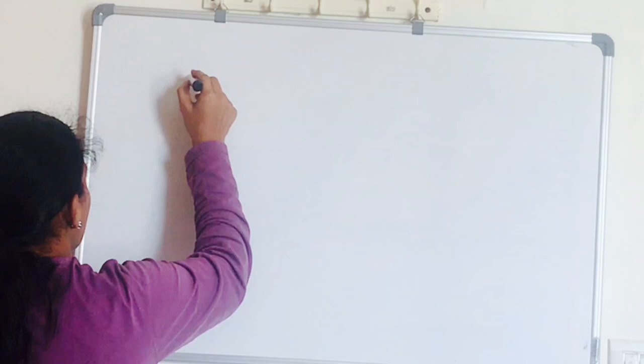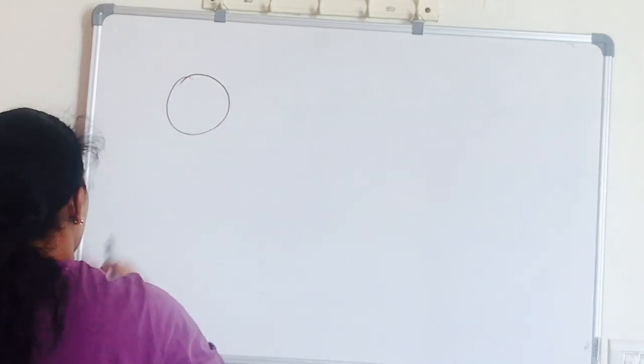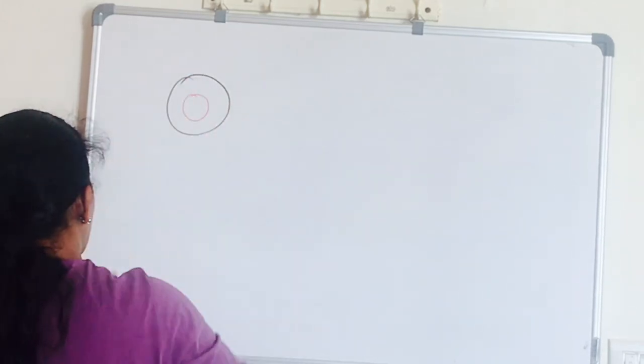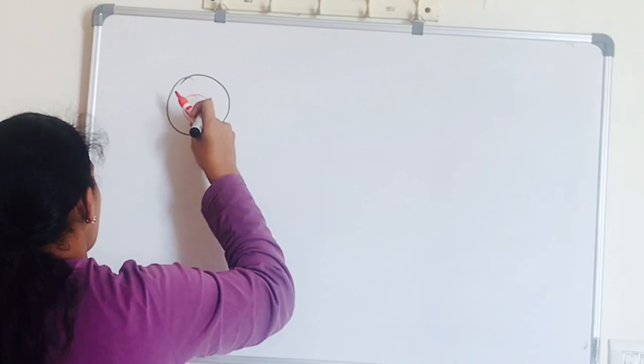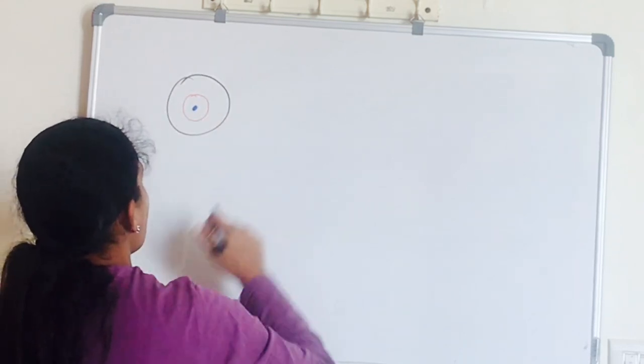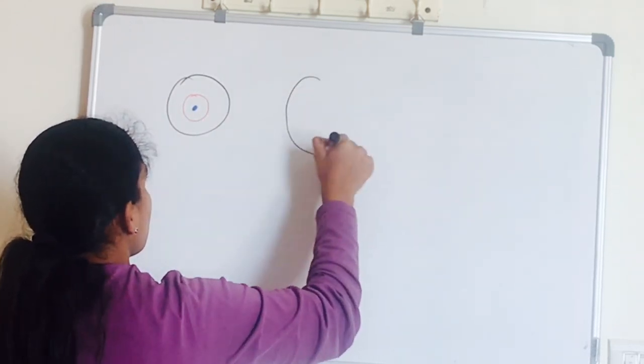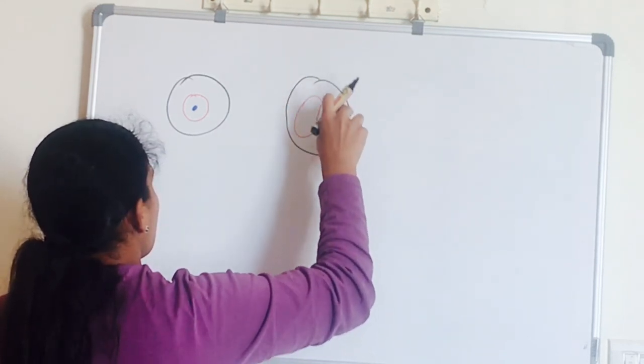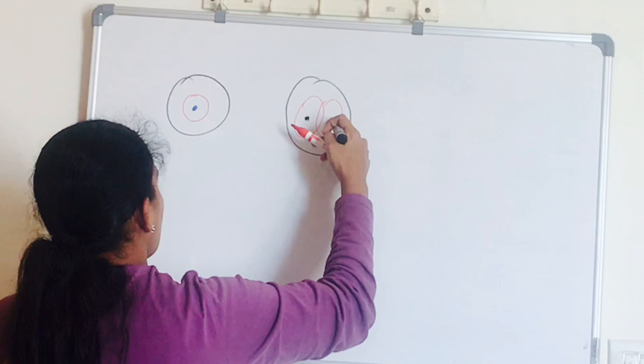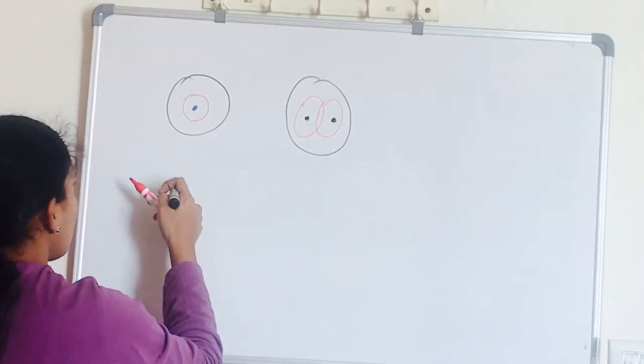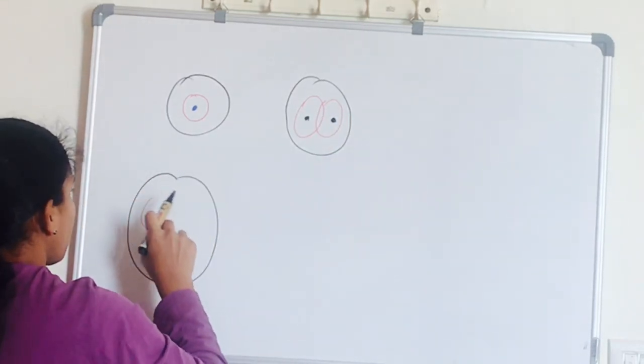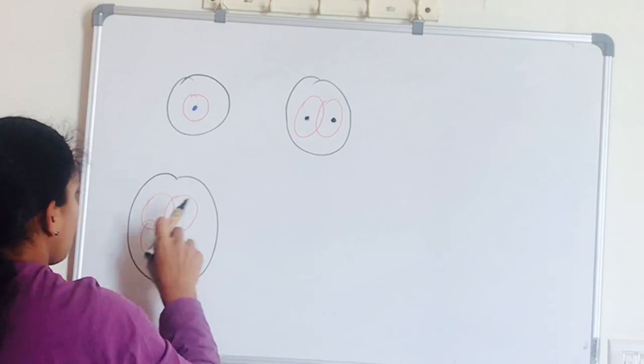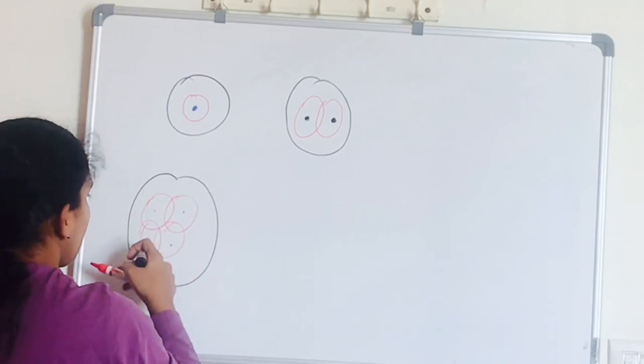Coming to the next step, cleavage. So the male pronucleus and female pronucleus with only haploid chromosome, that is 23, duplicates itself to form diploid chromosome number which is 46. And the cells undergo series of divisions: 2 cell becomes 3, then becomes 4, 5 cell.